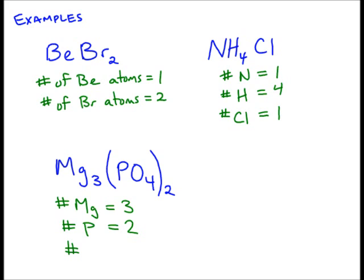And then if we look at the number of oxygen atoms, we see that for every phosphate, there's four oxygen atoms. We see that four directly following the oxygen. But remember, there's two phosphates, that 2 outside the bracket. So when we're trying to figure out the number of oxygen, we actually have to do 4 times 2, which is equal to 8. So there's 8 oxygen atoms in this scenario.